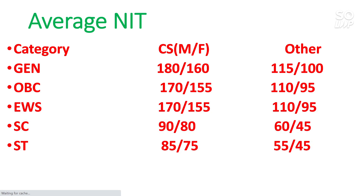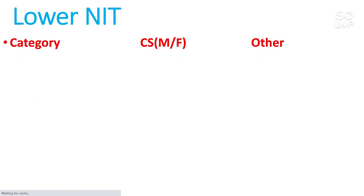For ST category at average NITs: 85 for male, 75 for female for CS, and 55 for male, 45 for female for other branches. I will also make a similar video for Triple IT and GFTI so be there with this channel. For lower NITs, if you want to get any possible NIT, General category needs 150 for male and 140 for female for CS — this could be NITs like NIT Agartala or NIT Sikkim. For other branches under General, 100 for male and 90 for female.